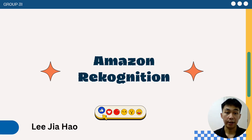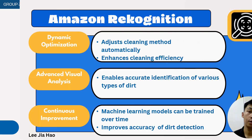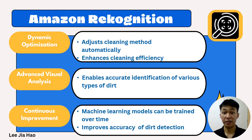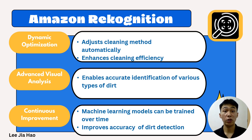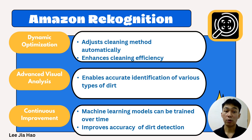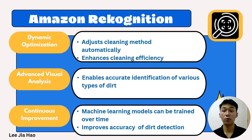My name is Li Cha Hao, and now I'm going to present about Amazon Rekognition. The first reason we chose Amazon Rekognition in our smart home cleaning system is dynamic optimization. Rekognition helps us to automatically adjust cleaning methods and strategies based on the detected dirt types, enhancing cleaning efficiency and effectiveness without unnecessary energy consumption. Next, Amazon Rekognition provides advanced visual analysis, enabling accurate identification of various types of dirt particles and stains. The last reason is continuous improvement — Rekognition provides machine learning models that can be continuously trained and refined over time, improving accuracy and reliability of dirt detection based on real-world cleaning experience.